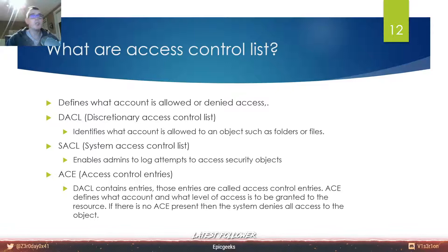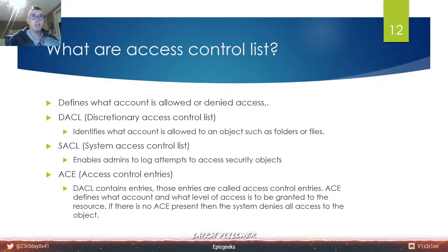Access control lists consist of entries called Access Control Entries (ACEs). The DACL contains ACEs, and these entries define what account has what level of access to be granted to the resource. For example, if there is no access control entry present on an object, it will deny all access. So remember to always specify some access control entries - this will also be done automatically when you promote a machine to a domain controller and configure your Active Directory network.